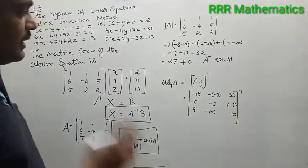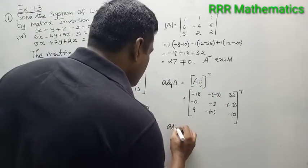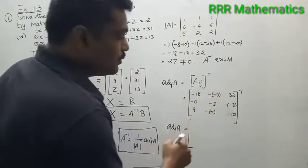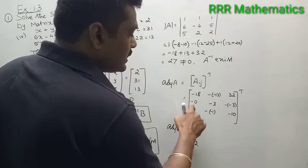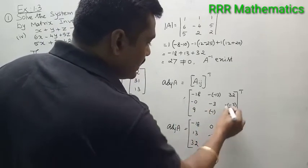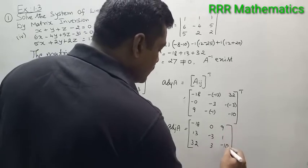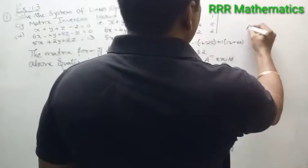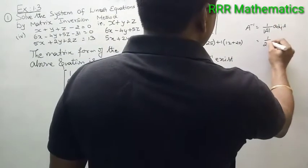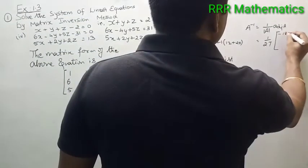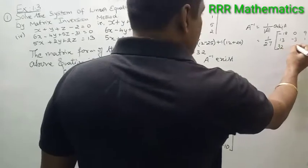I already explained how to find adjoint A in detail in the previous video — you can verify there. Now take the transpose: first row becomes first column: minus 18, plus 13, 32. Second row becomes second column: 0, minus 3, plus 3. Third row becomes third column: 9, plus 1, minus 10. This is adjoint A. So A inverse equals 1 by 27 into adjoint A, where adjoint A is the matrix with rows: minus 18, 0, 9 / 13, minus 3, 1 / 32, 3, minus 10.